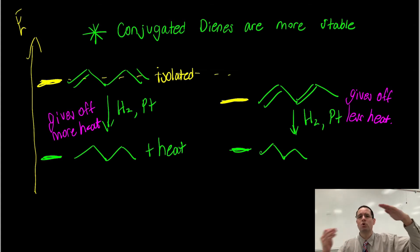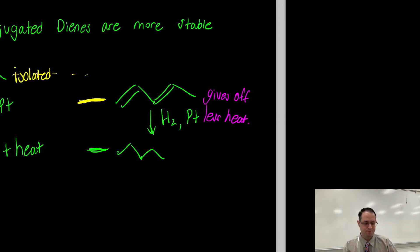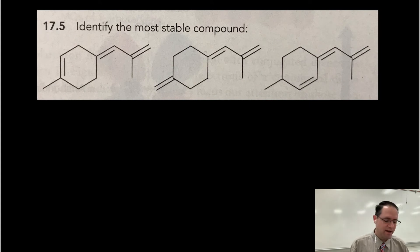So you have questions in the book, for example, that say, which of these substances would have the higher heat of hydrogenation or the lower heat of hydrogenation or ones that are more stable or less stable? So let me take you through a practice problem now. In this practice problem, we're asked to identify the most stable compound.